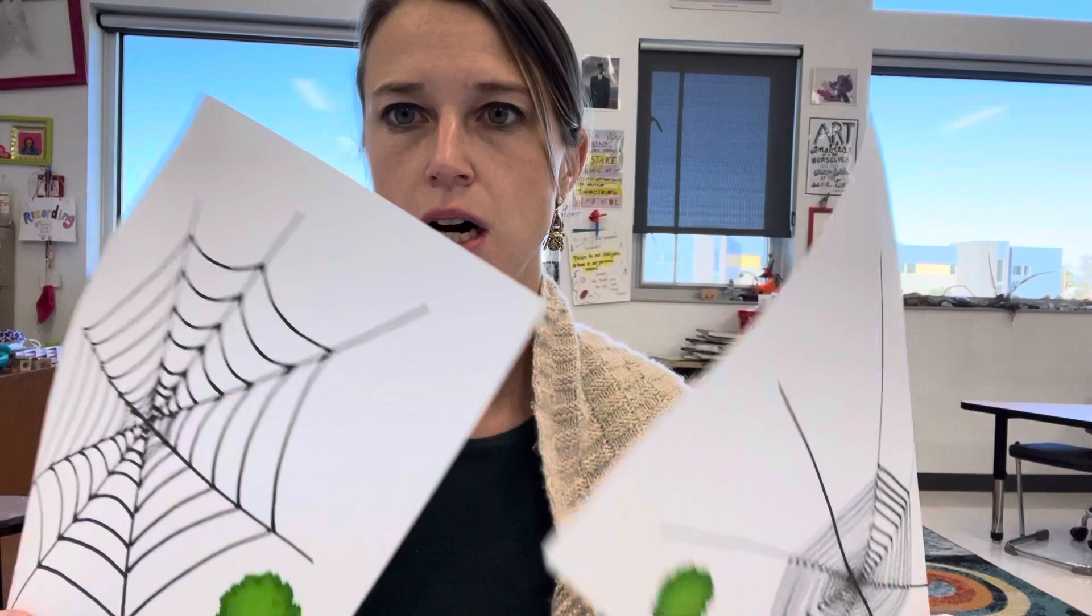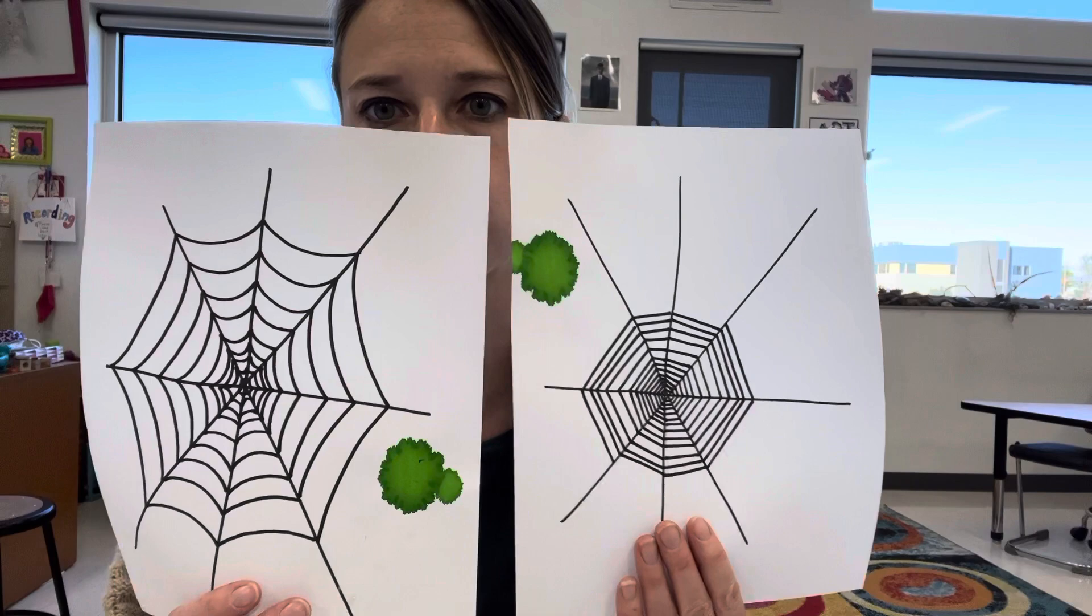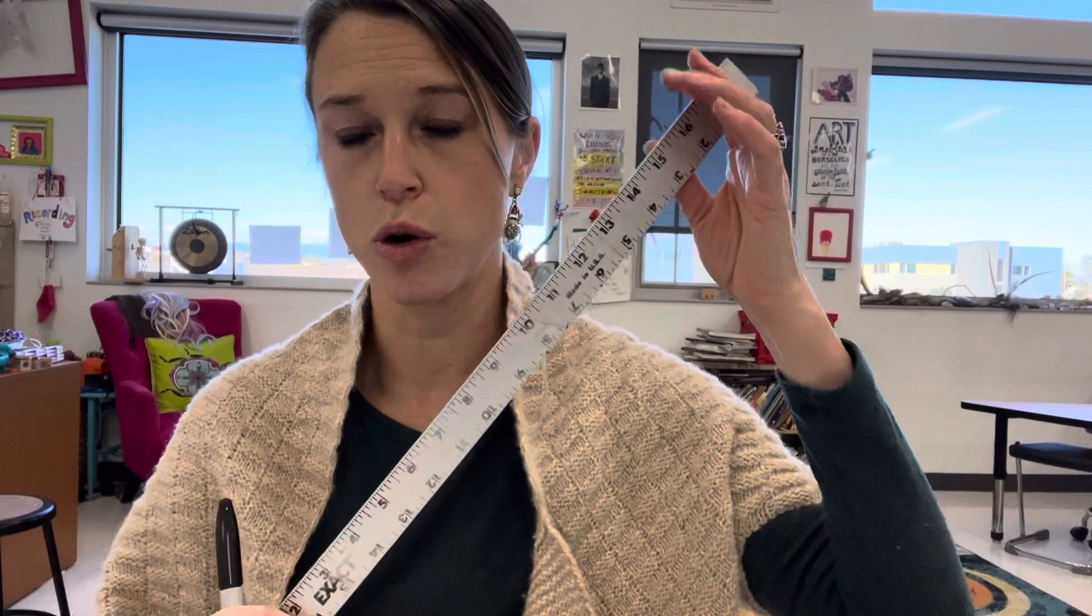Okay, so let's go ahead and get started. So the two different types of webs that I'm going to show you how to do are these. Okay, and neither of them are finished. They're ones that I started. But that's what I'm going to show you in this video today. You can use a ruler if you want to. You don't have to. I didn't for the webs that I just showed you, but I'm going to for the video. All right, here we go.